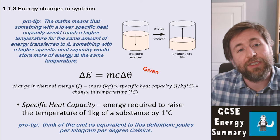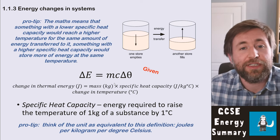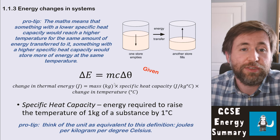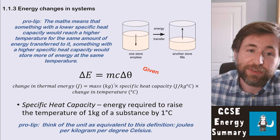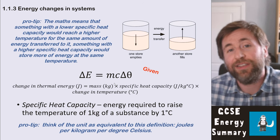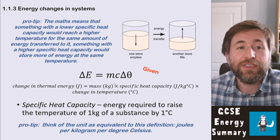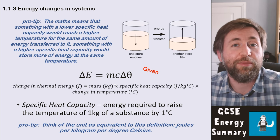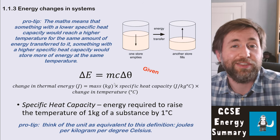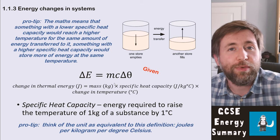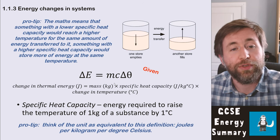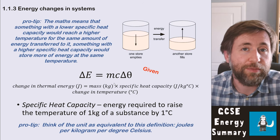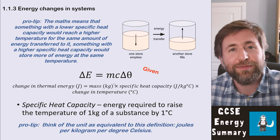Remember that the maths means something with a lower specific heat capacity could reach a higher temperature for the same amount of energy transferred to it. Something with a higher specific heat capacity would store more energy at the same temperature. For example, copper has a low specific heat capacity — if you put the same amount of energy into copper as you did into water, the copper would reach a higher temperature. It takes a lot more energy to raise the temperature of water per kilogram per degree Celsius.